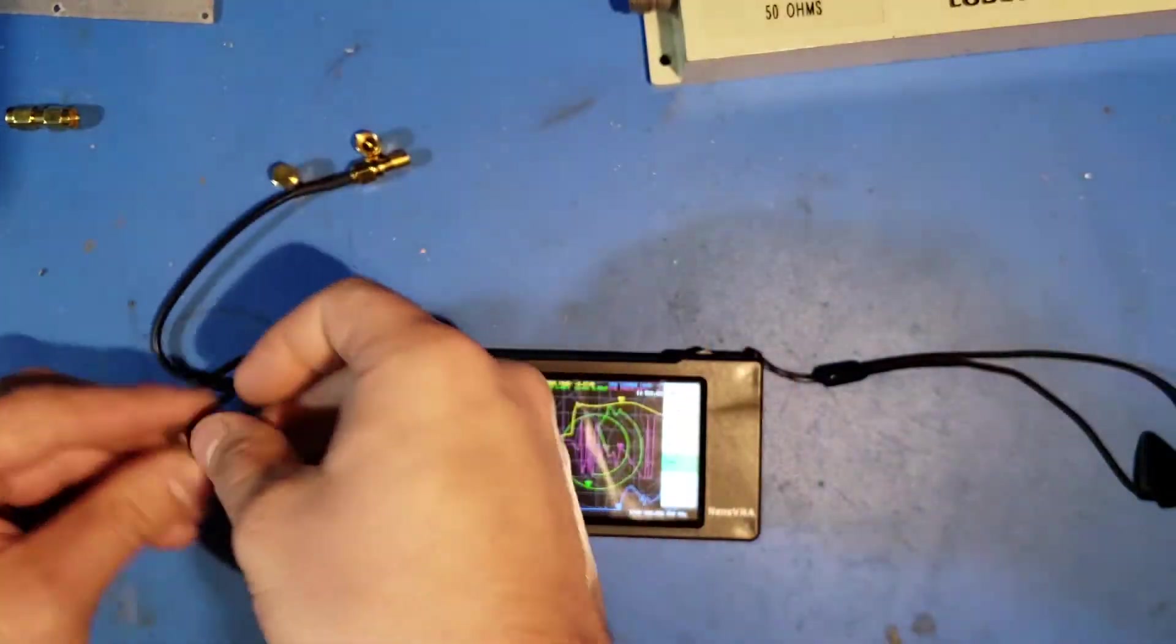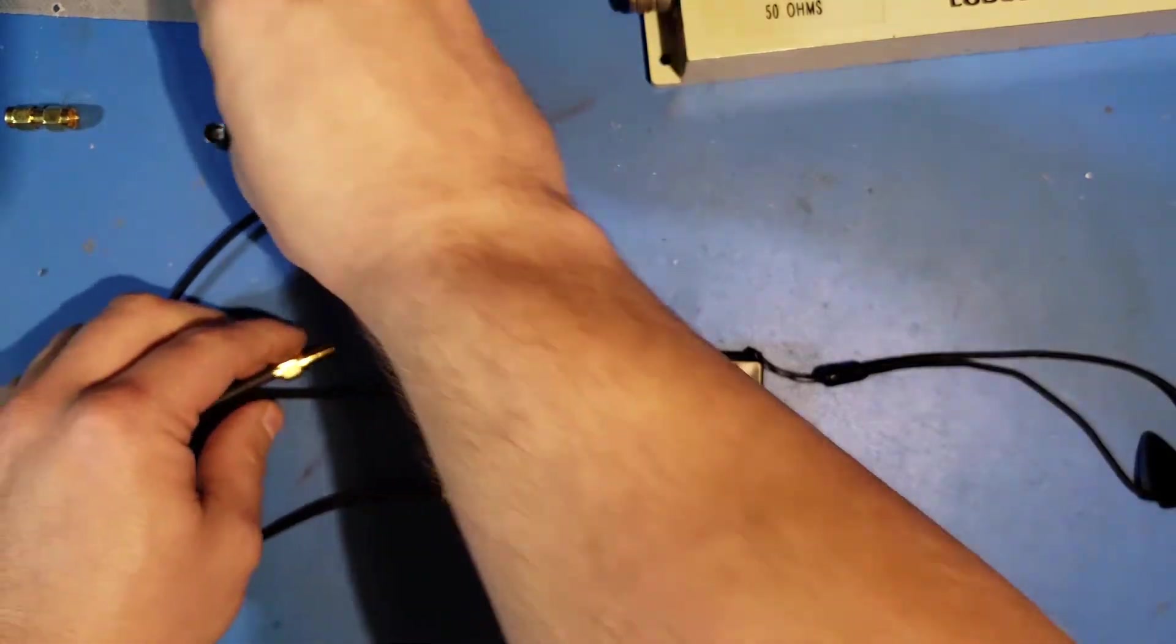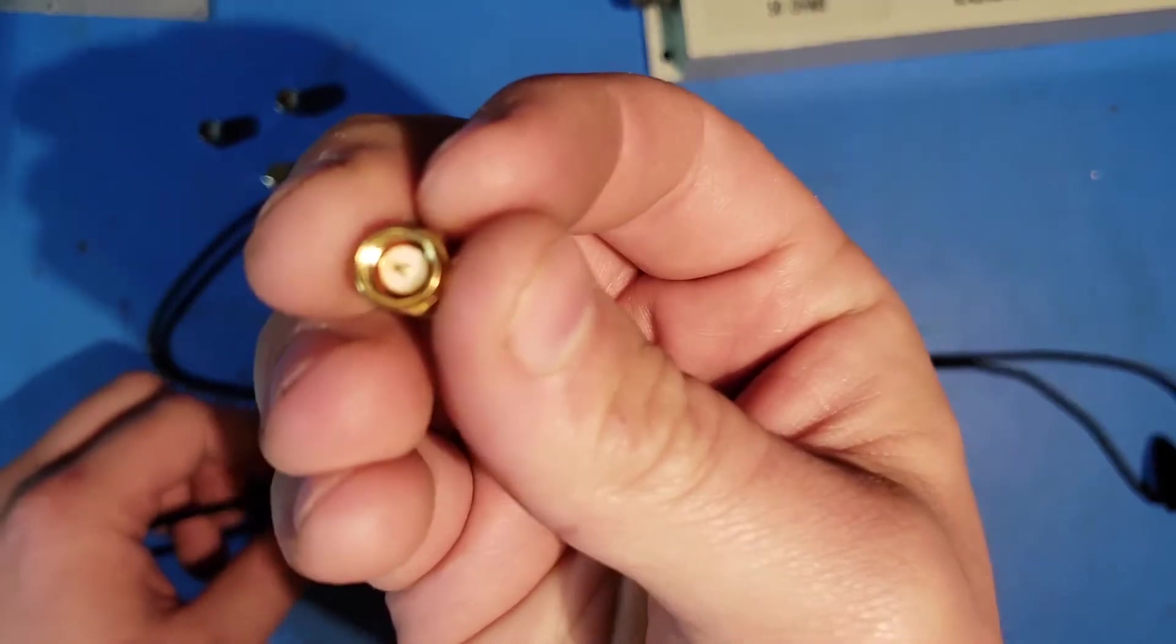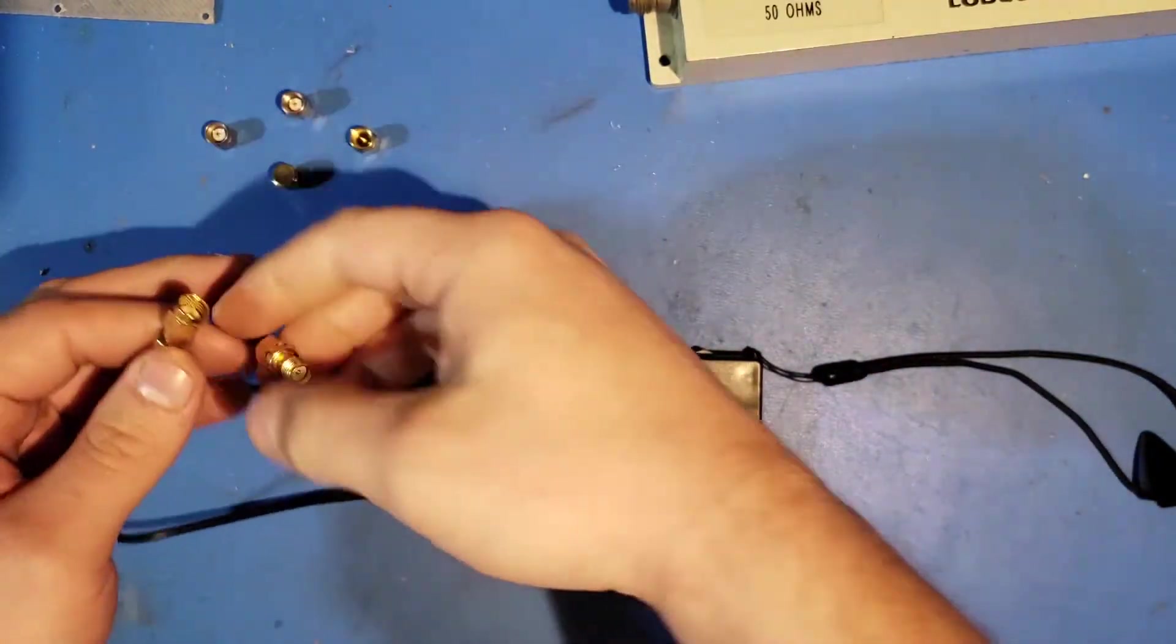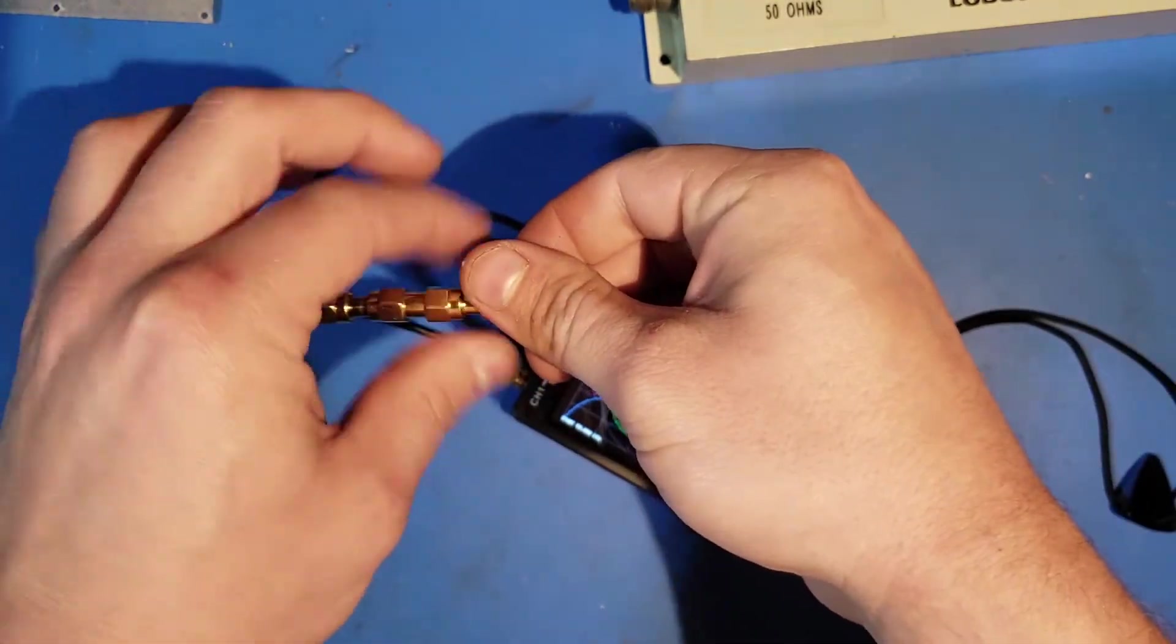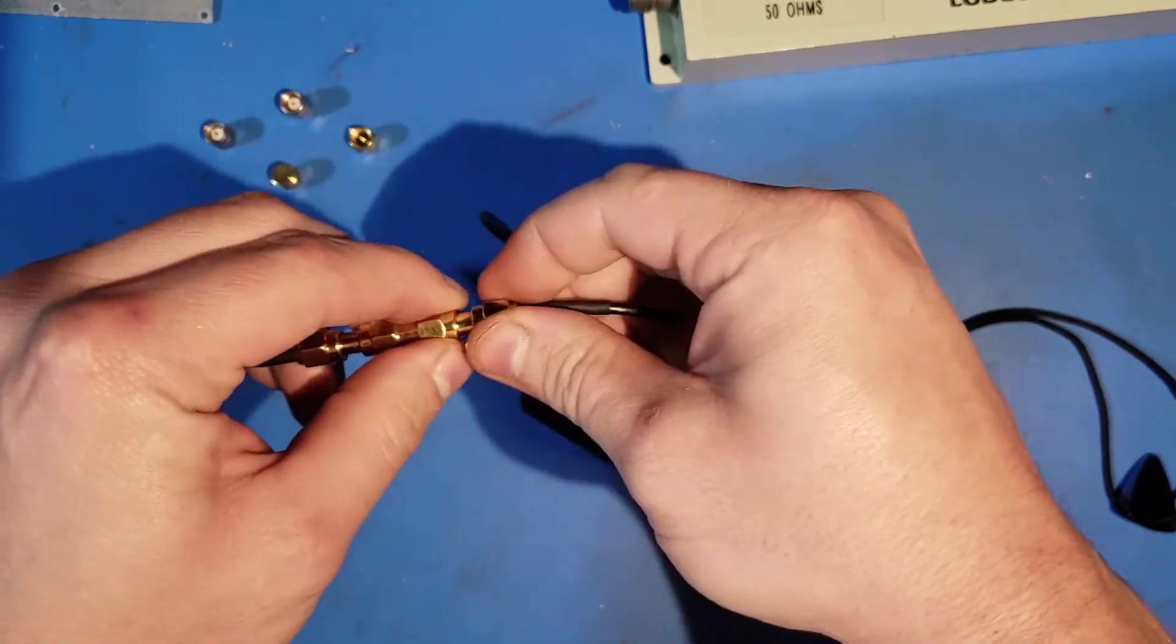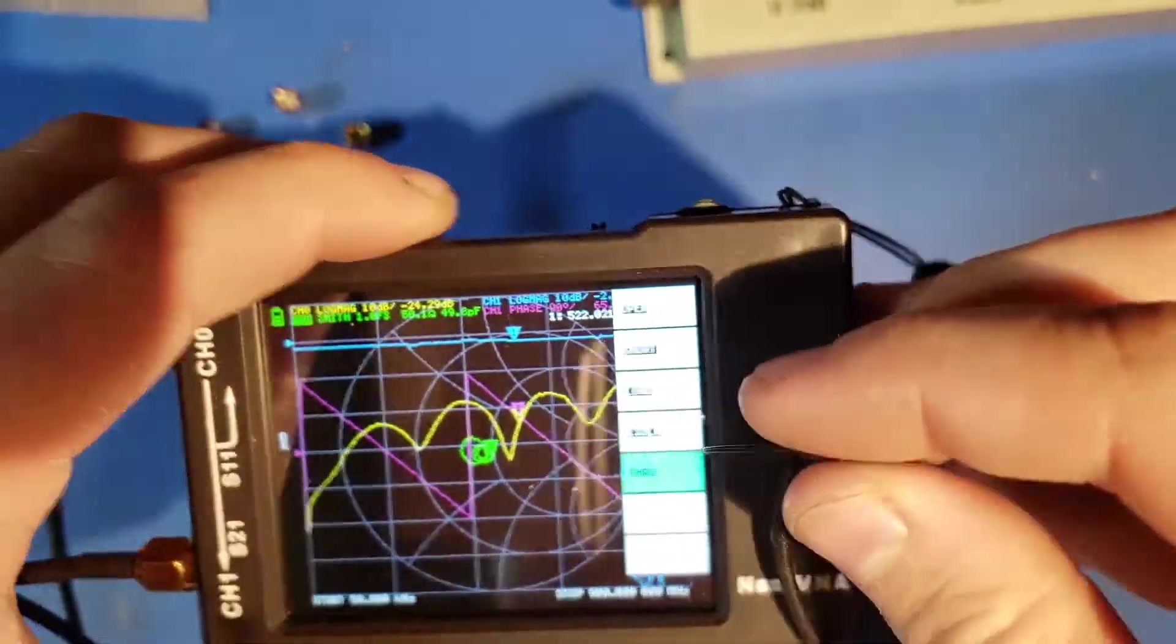Next, we want to connect them together. Remembering that we're not going to take off the adapters, we will use a male-to-male SMA connector here, and go between the two connectors. Once you have that on there nice and tight, you can go ahead and press the through button a couple times.